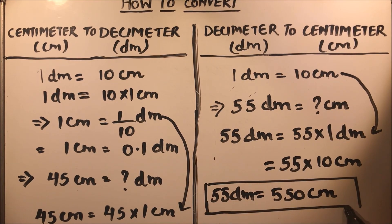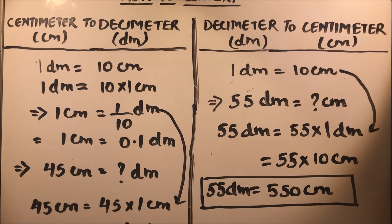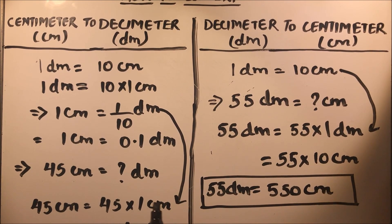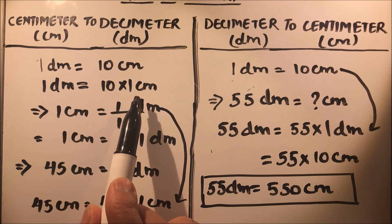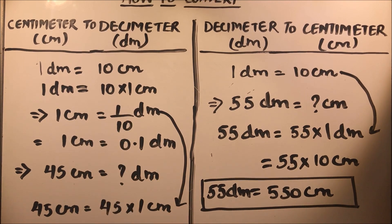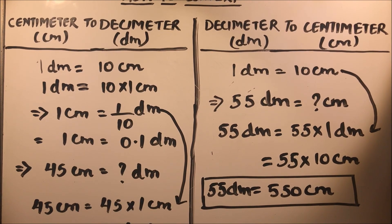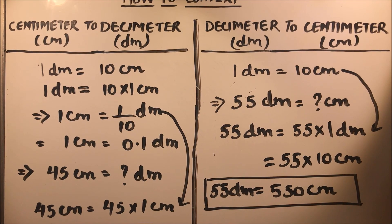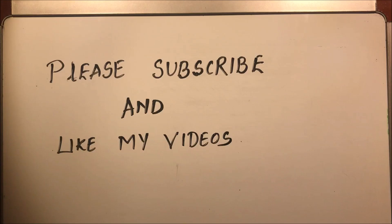So to convert from decimeters to centimeters, multiply by 10, and to convert from centimeters to decimeters, divide by 10. This is how we convert between decimeters and centimeters. Thanks for watching — please subscribe to my channel and like my videos.